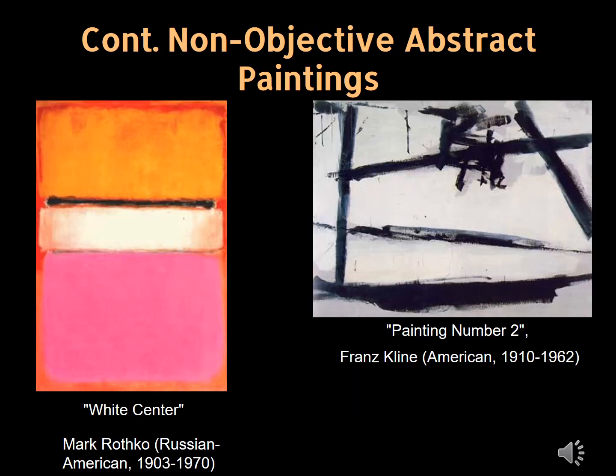Here are two American artists who painted using non-objective style: Mark Rothko and Franz Kline. The era Jackson Pollock, Mark Rothko, and Franz Kline painted in is called Abstract Expressionism. Abstract Expressionism is a style of art where you express yourself using the elements of art, such as colors, lines, shape, forms, and texture. The work they created during this time didn't show anything recognizable, but the artwork did have meaning.